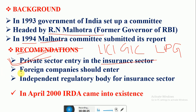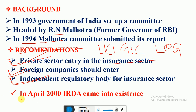The third recommendation was for an independent regulatory body for the insurance sector. The committee opined that a fully autonomous statutory body should exist whose sole purpose would be to look after the insurance business, the protection of policyholders, and the orderly development of the insurance sector.